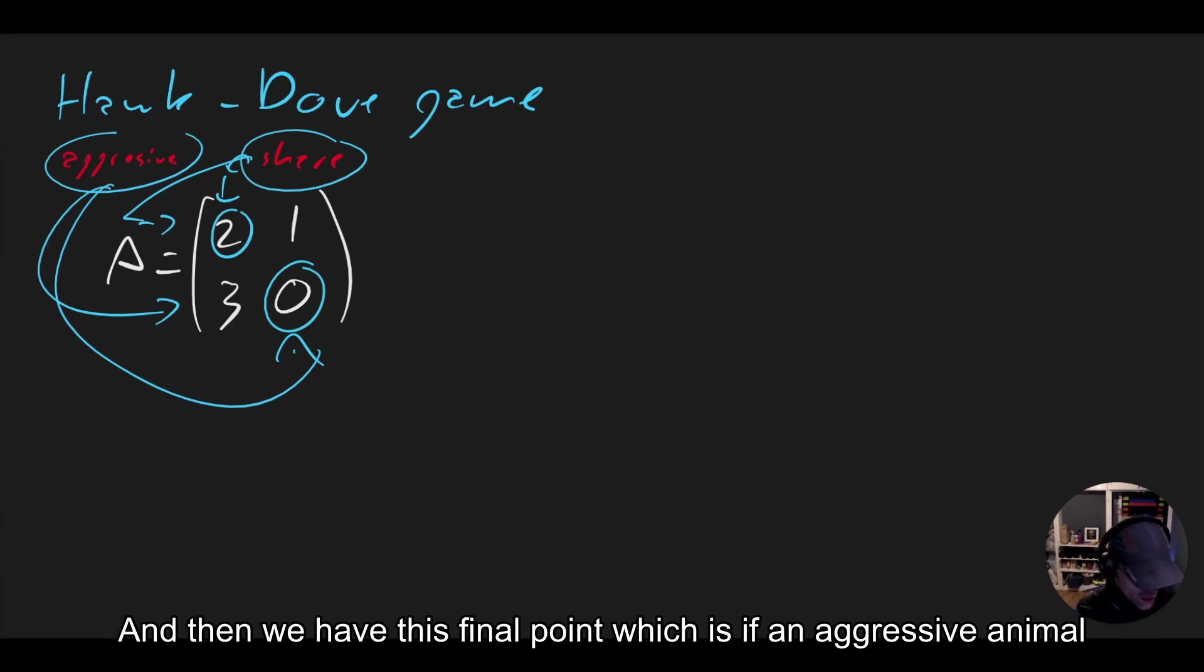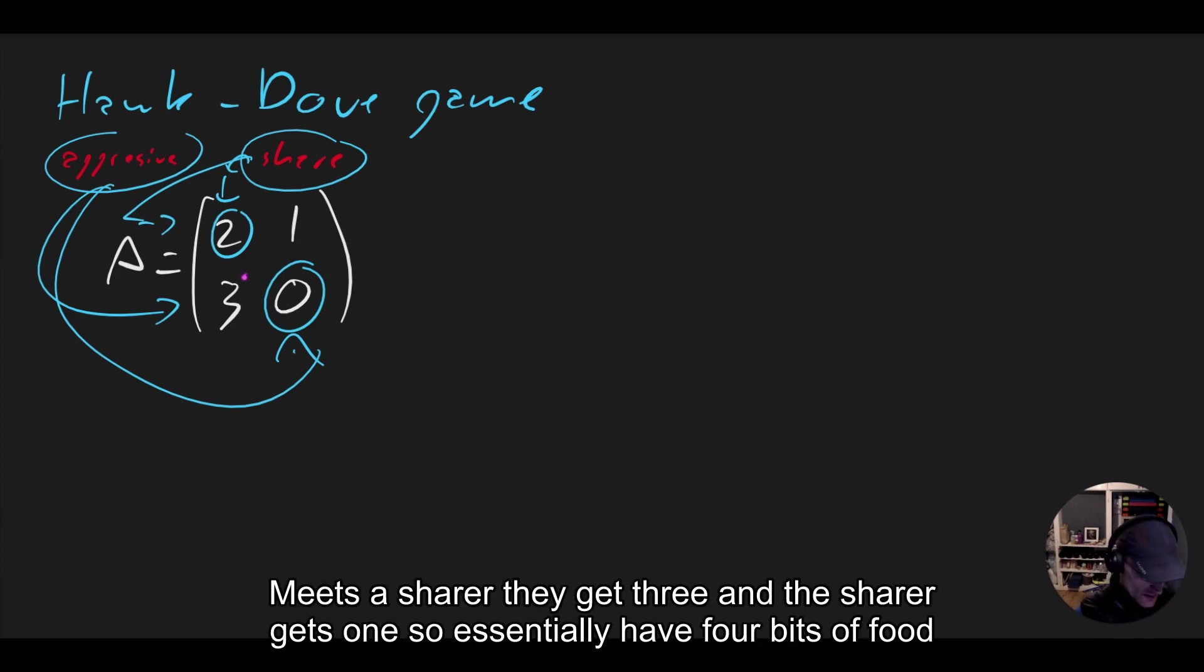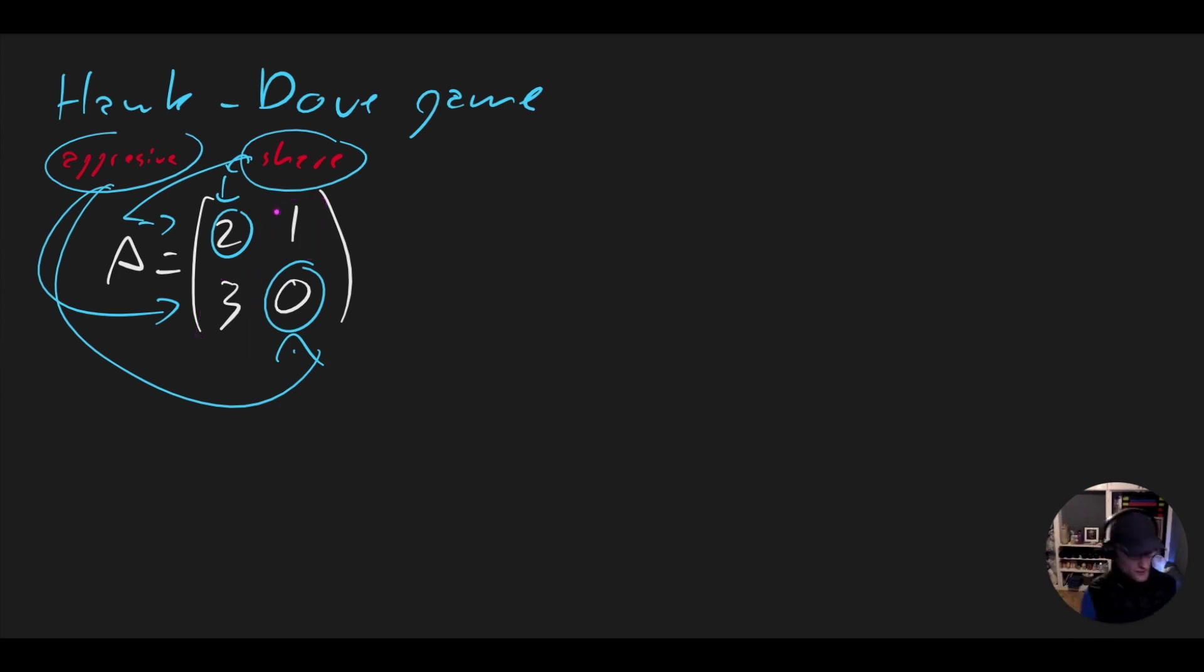And then we have this final point, which is if an aggressive animal meets a sharer, they get three and the sharer gets one. So essentially have four bits of food that will get shared or fought over or indeed lost.